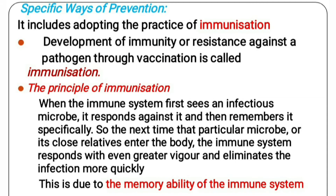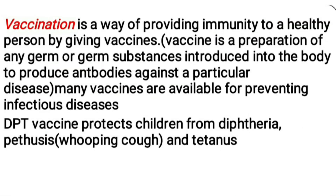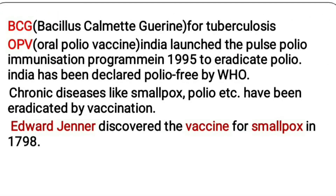Immunization is stimulating the body to produce antibodies by artificial means. This is done by taking vaccines against certain diseases. Vaccination is a way of providing immunity to a healthy person by giving vaccines. Diseases like smallpox and polio have been eradicated by vaccination. A vaccine is any germ or germ substance introduced into the body for developing resistance to a particular disease. The first vaccine was discovered by Edward Jenner against smallpox.